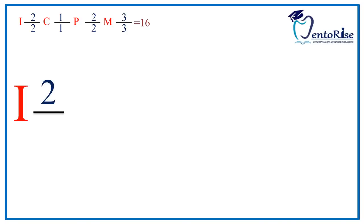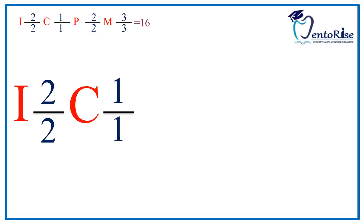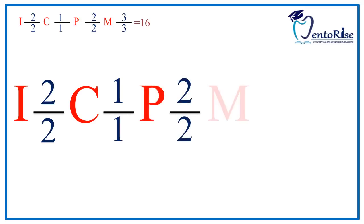2 above the horizontal line implies 2 incisors are present in the maxilla — that is the central incisor and the lateral incisor. 2 below the horizontal line implies 2 incisors are present in the mandible — the central incisor and the lateral incisor. C depicts canines: 1 above the horizontal line implies 1 canine in the maxilla, and 1 below implies 1 canine in the mandible. P depicts premolars: 2 in the maxilla and 2 in the mandible. M depicts molars: 3 in the maxilla and 3 in the mandible. Please note the formula includes the number of teeth on one side only.